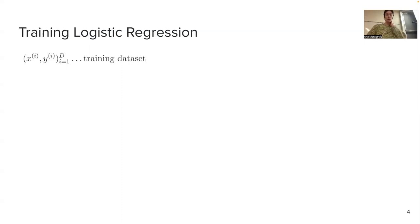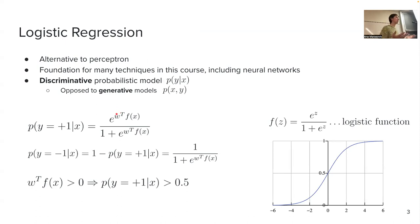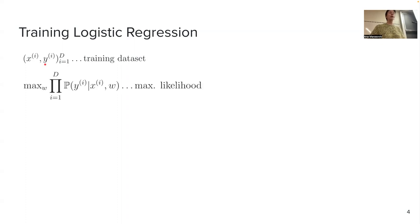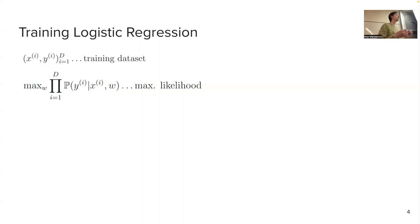Let's see how we can train logistic regression. We have weights W that we don't know. As always with supervised machine learning, we start with a training dataset of inputs and outputs, and we want to maximize the likelihood — the probability of the true label for a given example, given the input and current weights. We use the property that examples are independently and identically distributed, which allows us to write the joint probability as a product.